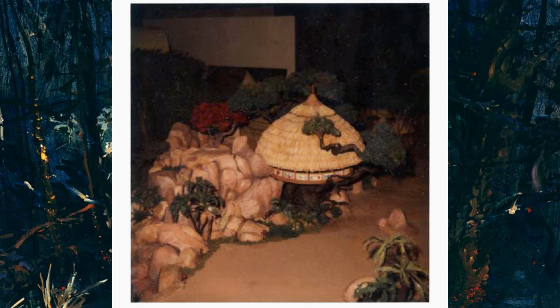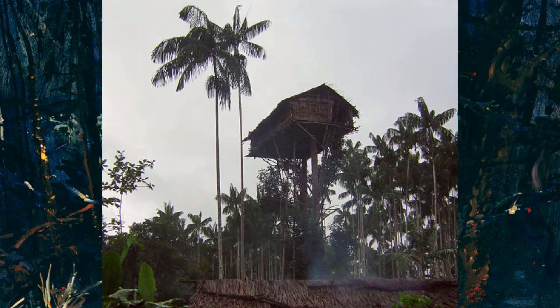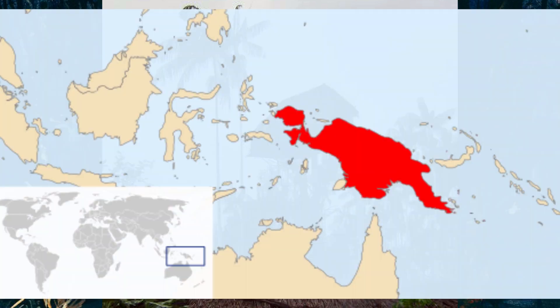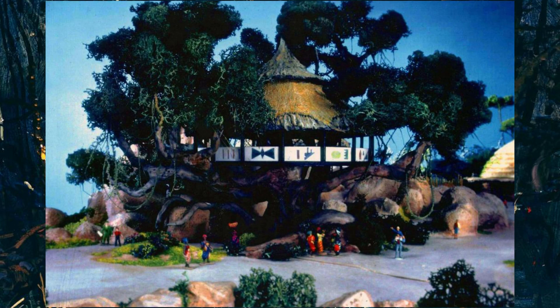Why the fudge is it a treehouse? As far as I've seen, there are no traditional African treehouses. There are some dark-skinned people known as the Korowai who do live in trees, but they aren't Africans — they're from New Guinea, out in the Pacific Ocean. Oceania is not Africa. Moving on.